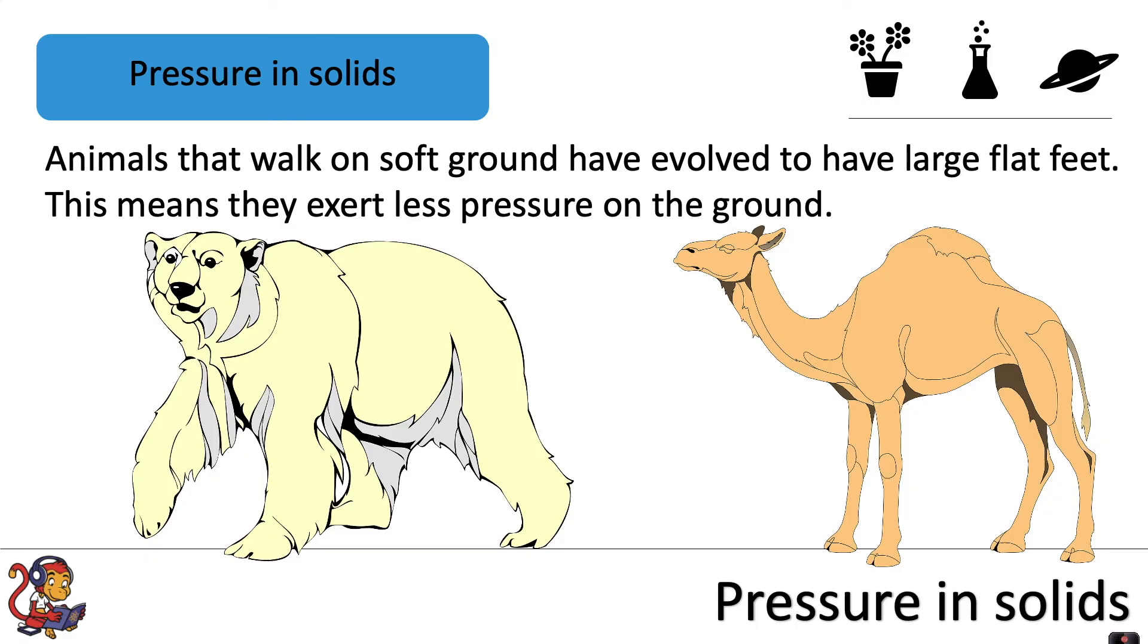Animals that walk on soft ground have evolved to have large flat feet, and this means they exert less pressure on the ground. So polar bears, for example, walking in the snow—large flat feet reduces the pressure on the snow, which means they can walk on top of it. And the same with camels when walking on the sand.